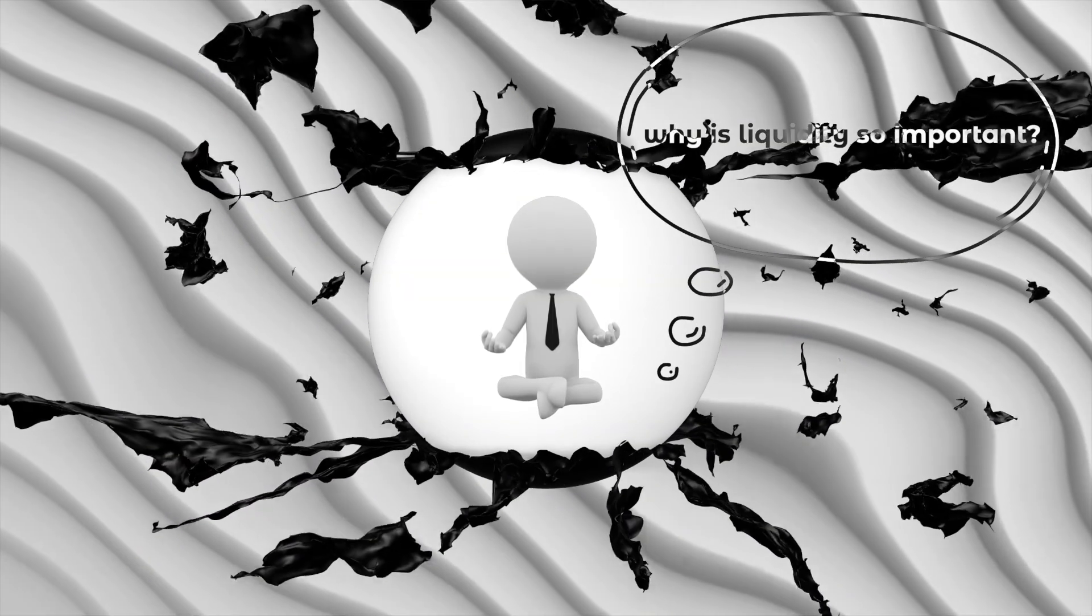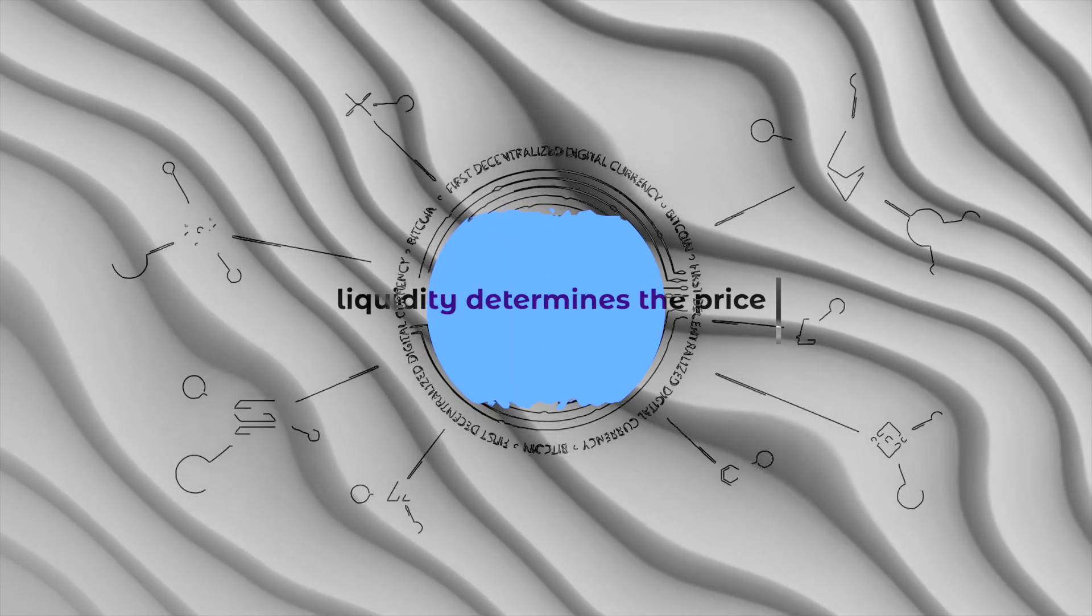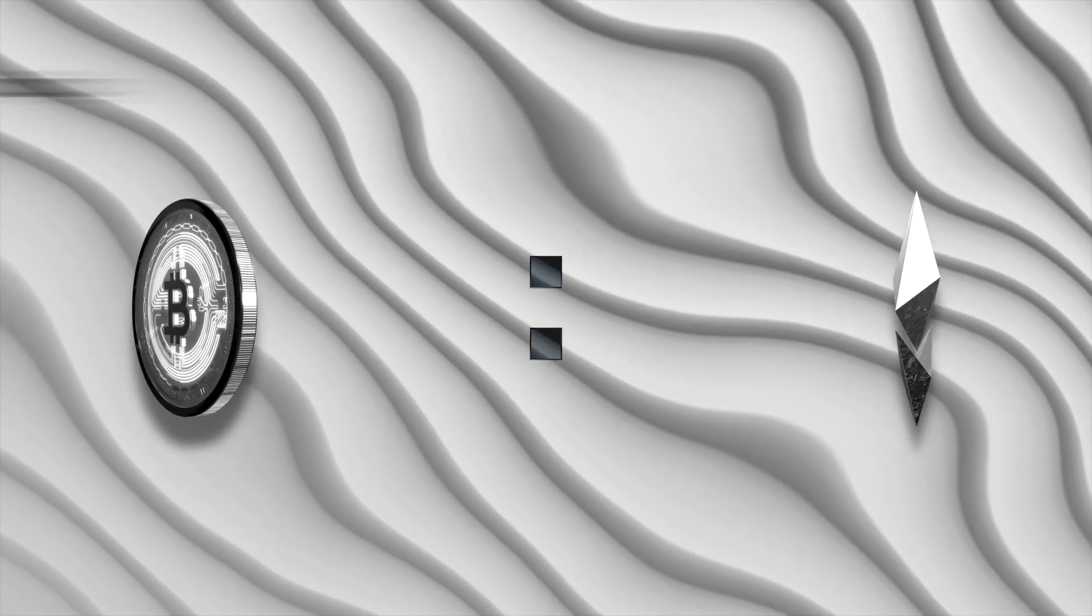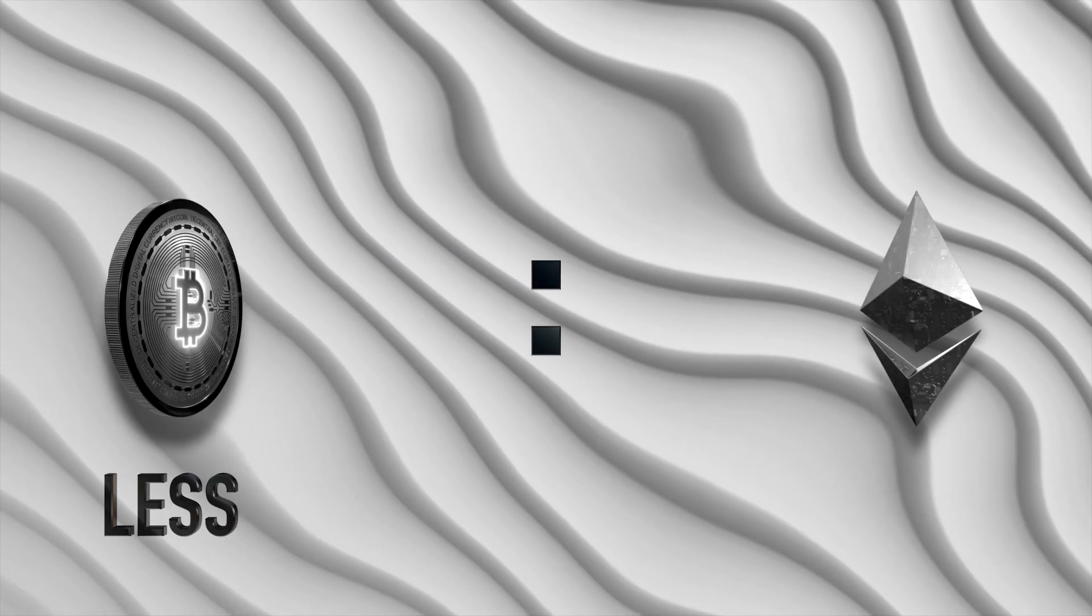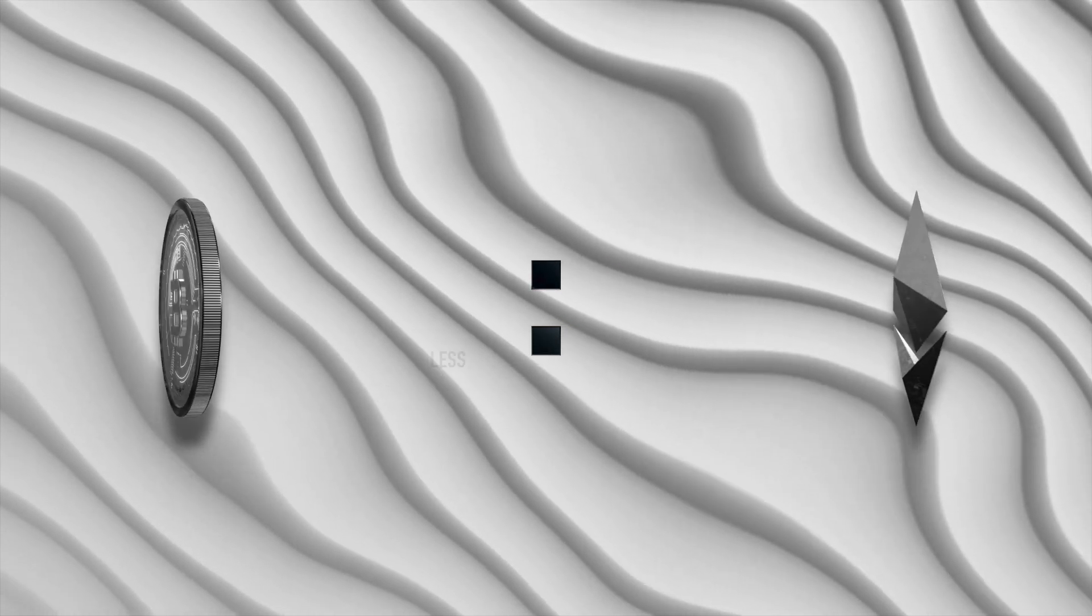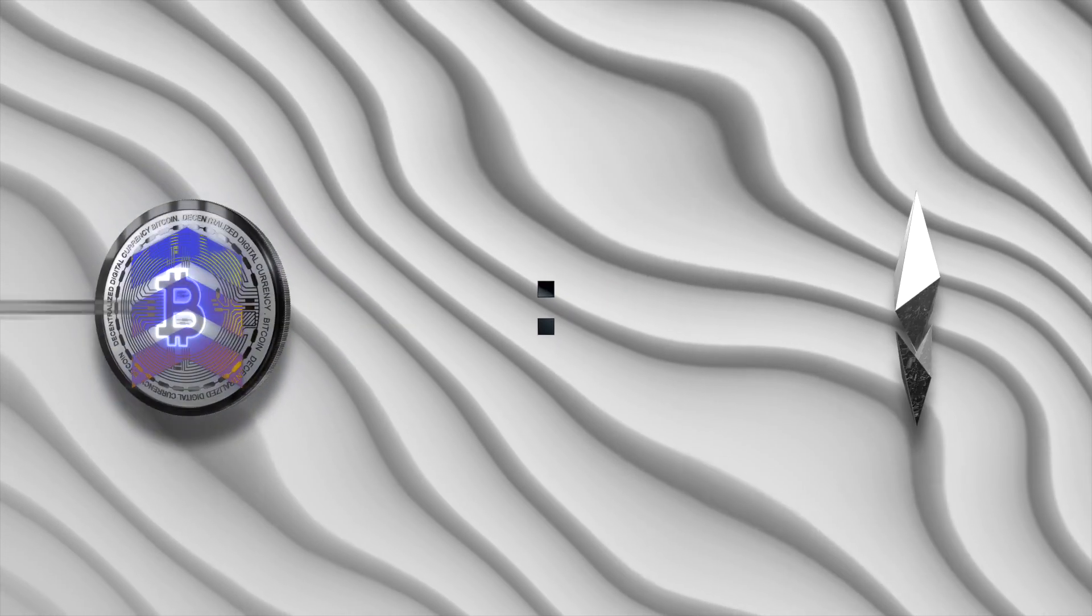So why is liquidity so important? First, on a decentralized exchange, the liquidity determines the price, as the price is derived from the ratio within the liquidity. For example, if there's less wrapped Bitcoin than Ethereum in wrapped BTC slash Ethereum liquidity pool, wrapped BTC would be priced higher than Ethereum, driven by scarcity within the liquidity pool.